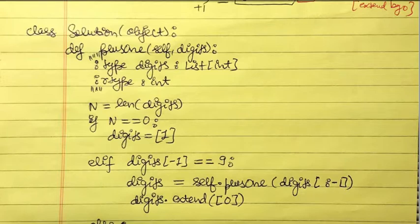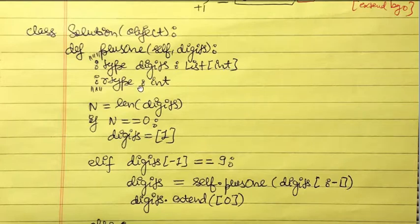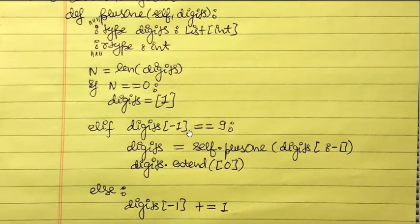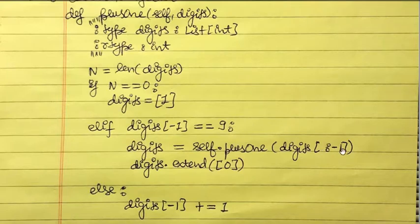Now for the Python implementation. We have a class Solution with a function plus_one that takes self and digits — a list of integers representing our number — and returns the result list. We compute n as the length of digits. If the length equals one and digits is empty we return [1]. Otherwise, if the last element digits[-1] is nine, we recursively call self.plus_one on digits up to but not including the last element.